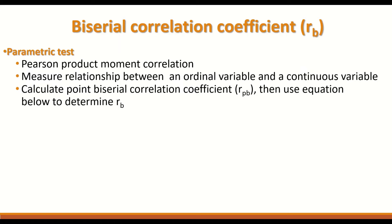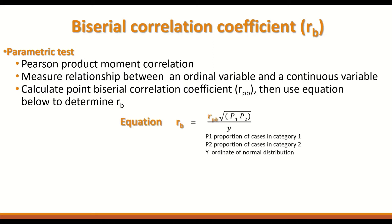It first calculates the point biserial correlation coefficient Rpp, then uses the equation below to determine the biserial coefficient. Rpp equals the point biserial correlation. The biserial coefficient is Rpp multiplied by the square root of the proportion of cases in category one times the proportion of cases in category two, divided by the ordinate of the normal distribution. I will shortly show you how to use this formula.